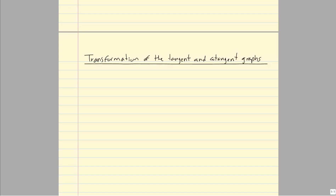When we look at transformations of the tangent and cotangent graph, a nice general way is to write it as y = c + a·tan[b(x − d)], the same form as we had for sine and cosine. The c value is a vertical shift up or down c units. The absolute value of a would be the amplitude you might think, but since there's no maximum or minimum value, it's actually just a vertical stretch or compression by a factor of a.